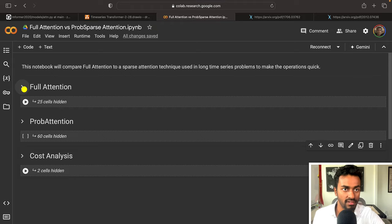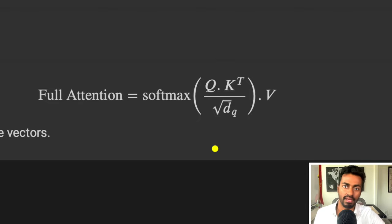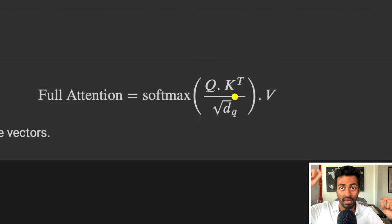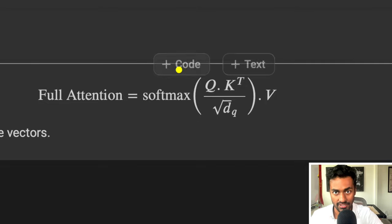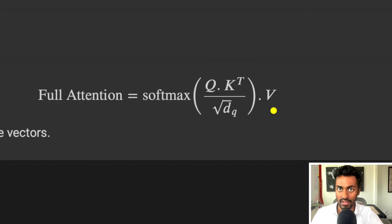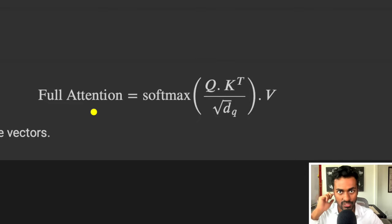Full attention is given by this mathematical representation, where we apply a query vector multiplied by a key vector in order to get affinity for every time step with every other time step. We then scale it and perform softmax, and then apply this attention matrix to the value vector in order to get the full attention. These terms will become more clear as we go on with our explanation.